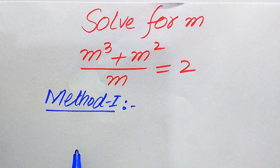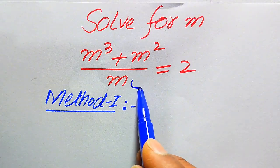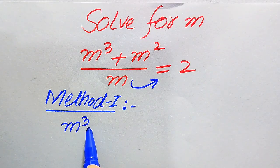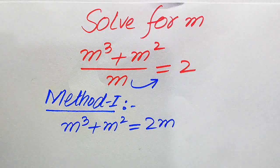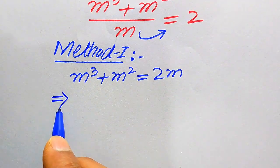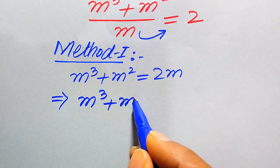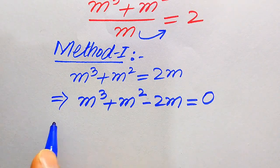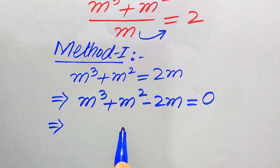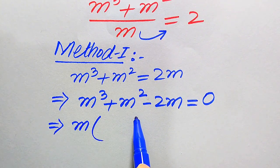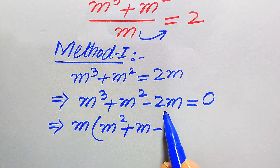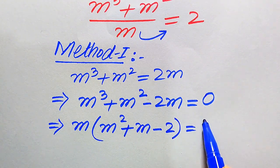Now we move towards the solution from the first method. We move m to the right hand side — since it is dividing, when moved it becomes multiplied — so m³ + m² equals 2m. In the next step we move 2m to the left hand side, giving m³ + m² − 2m = 0. Each term involves m, so we take m as a common factor, leaving m(m² + m − 2) = 0.